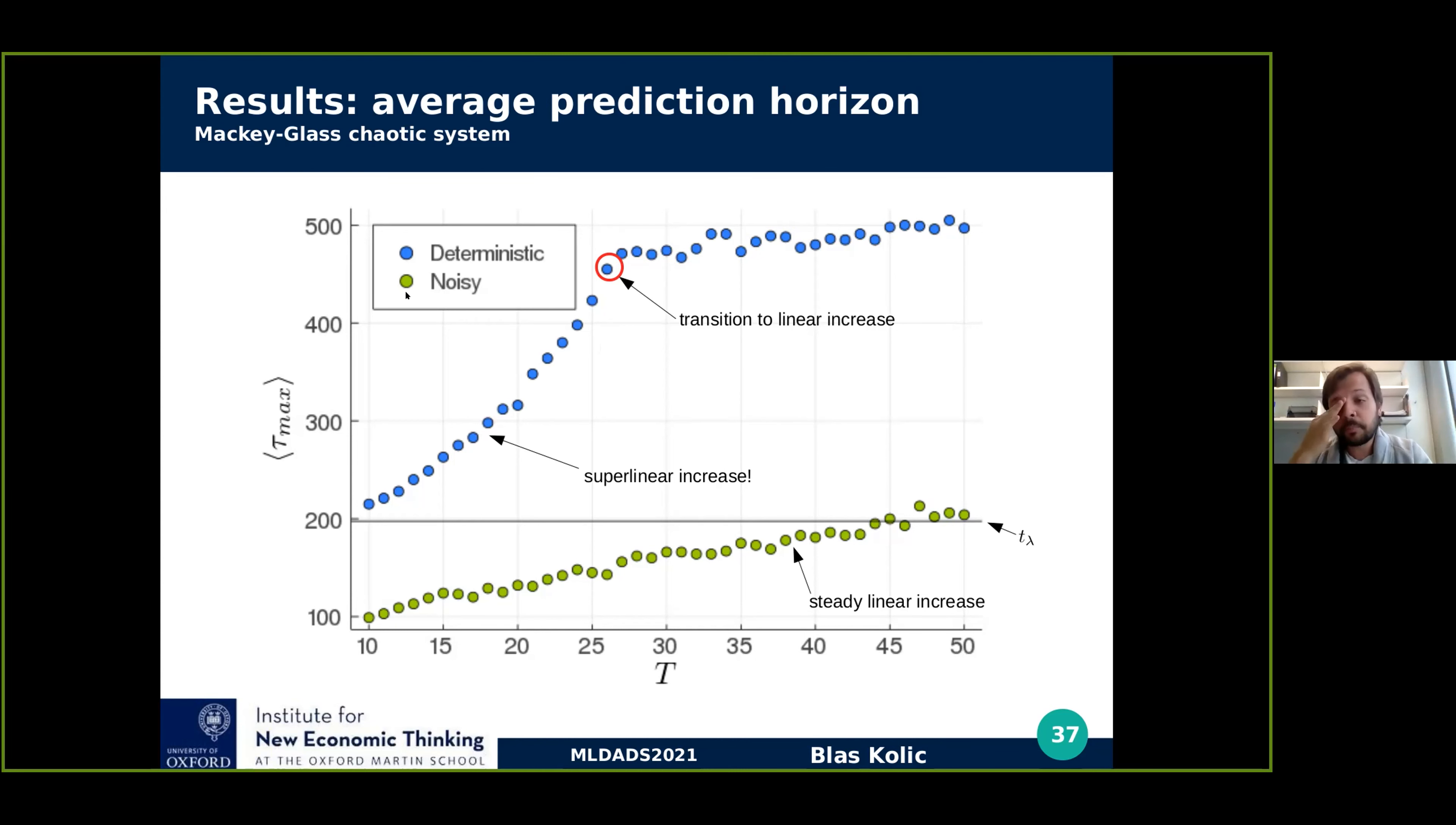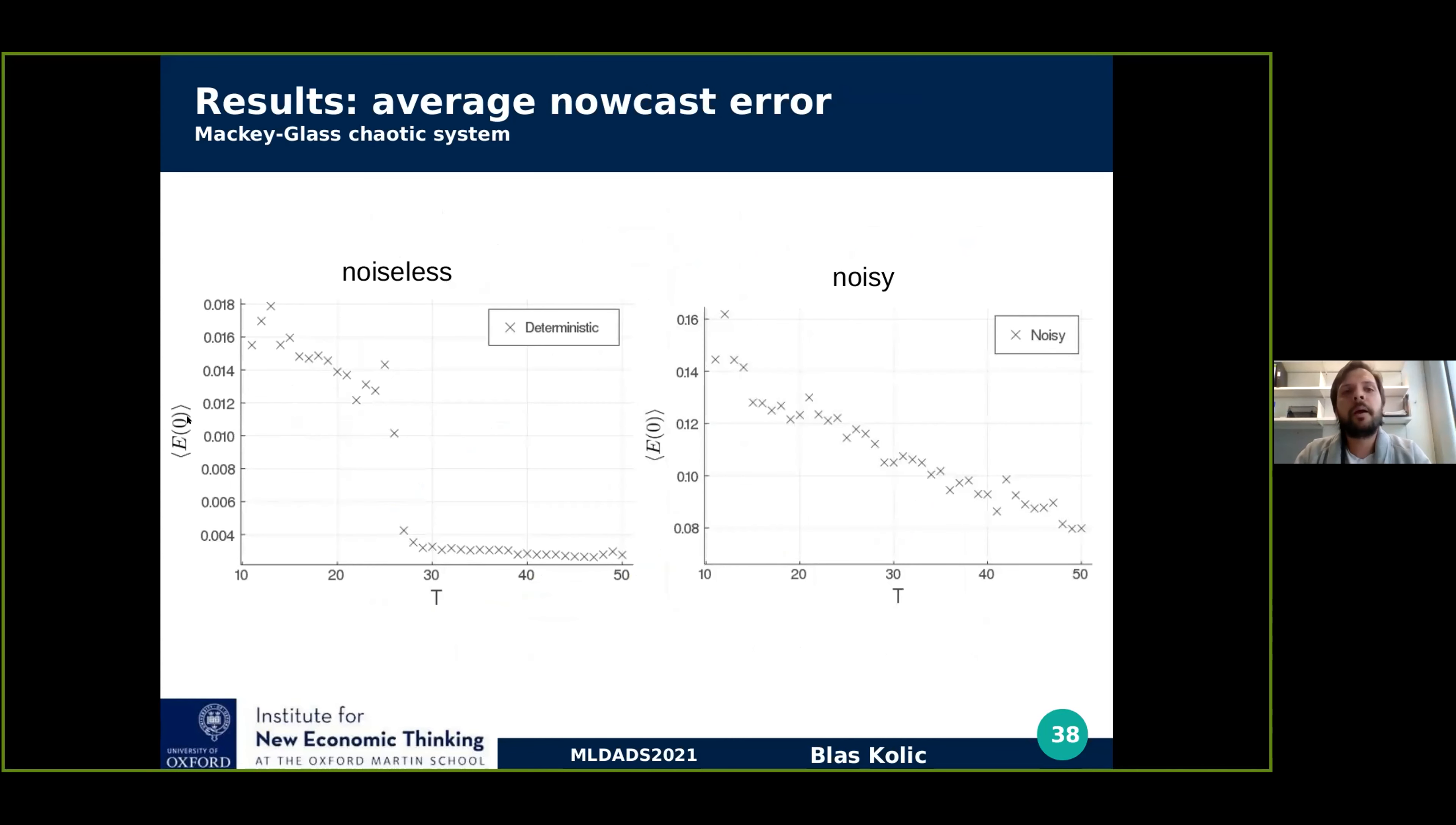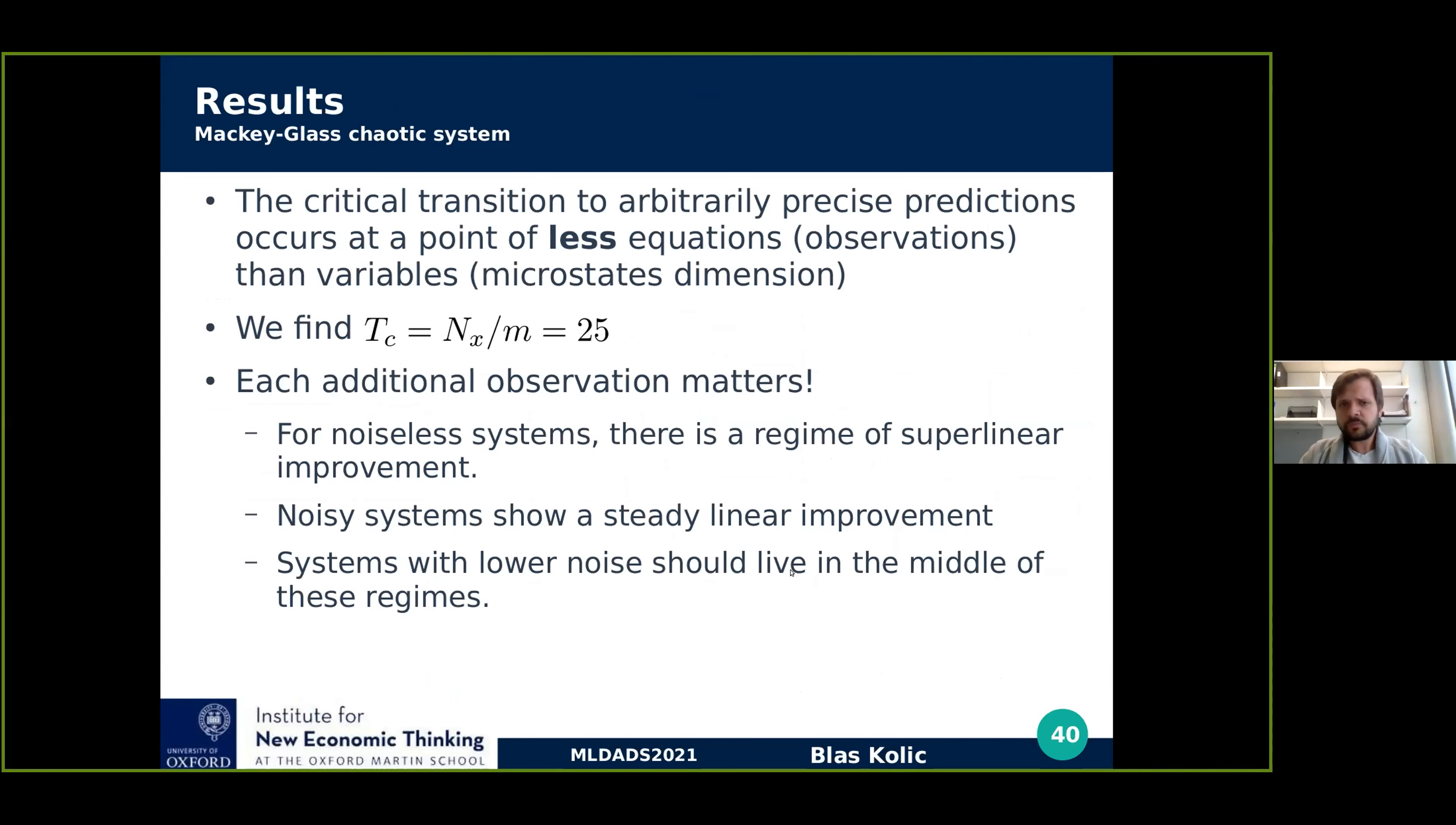We do a similar plot, but now instead of the prediction horizon, we do it with the prediction accuracy. Because I'm running out of time, I just want you to notice that there is a critical transition here at the same point as before, where after 25 observations, we can do predictions with arbitrary precision. This dashed line over here is just the refinement threshold that we had in the right units. And we can get arbitrarily precise by just setting this threshold as we want after 25 observations in a system of 50 dimensions. In the case of noisy observations, we have a steady improvement with every observation we add.